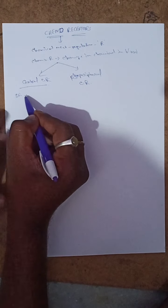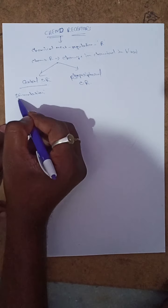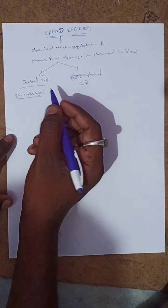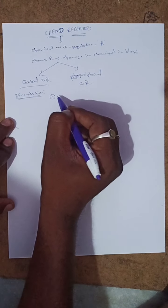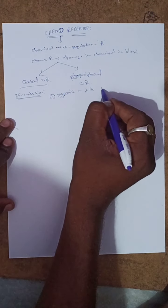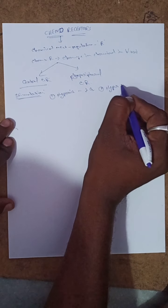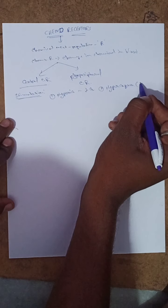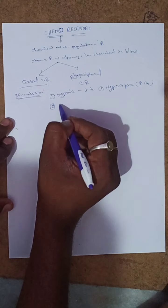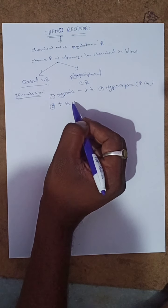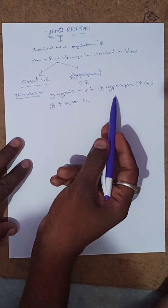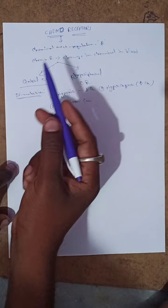How are the chemoreceptors stimulated? The first stimulus is hypoxia — that is, a decrease in the O2 level. The second is hypercapnia, which means an increase in the CO2 level. The third is an increase in the hydrogen ion concentration. So: decreases in O2, increases in CO2, and increases in hydrogen ion concentration all stimulate the chemoreceptors.